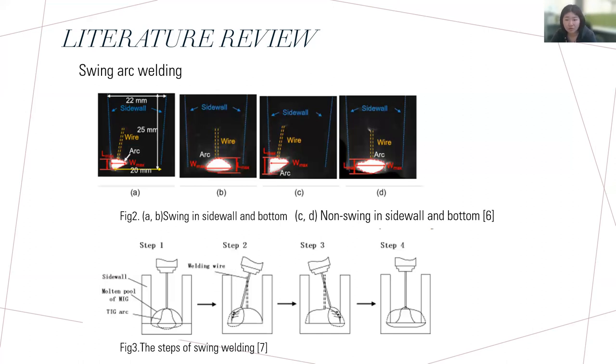Swing arc welding increases the arc width and length. Sidewall penetration increases with the widening of oscillation width. However, an excessively wide width may lead to defects such as porosity.